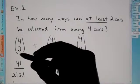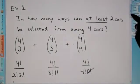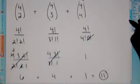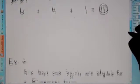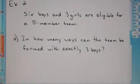Again, choosing two, choosing three, or choosing all four. There's eleven different options. The next example says example two. Six boys and three girls are eligible for a five-member team. In how many ways can the team be formed with exactly three boys?